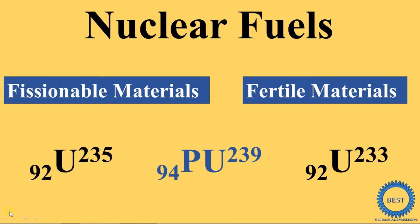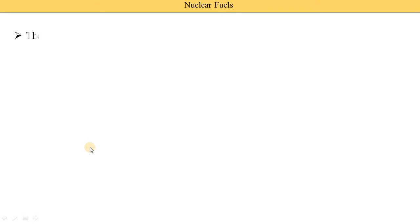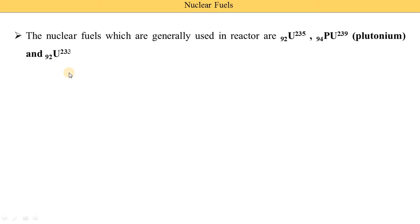In this video, I explain types of nuclear fuels. The nuclear fuels which are generally used in a reactor are 92 Uranium-235, 94 Pu-239 — Pu means Plutonium — and 92 Uranium-233.